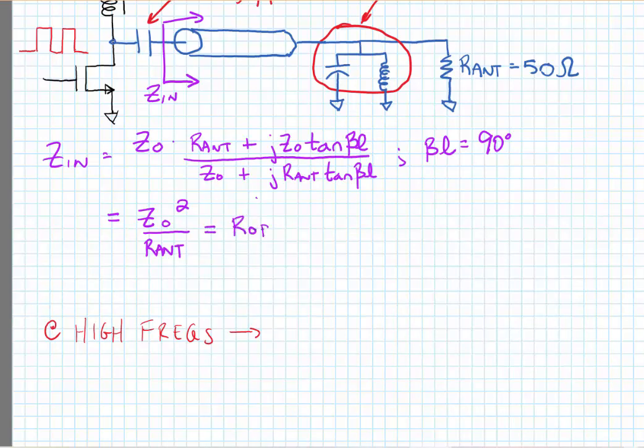Solving for this would yield that Z naught would be equal to the square root of the product of the optimum termination resistance and the antenna impedance.